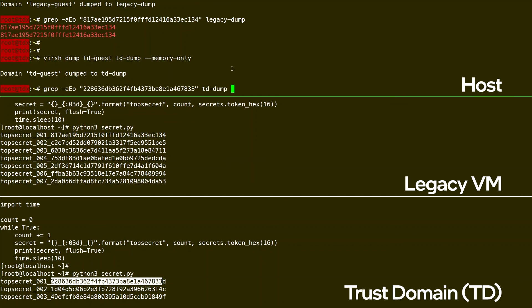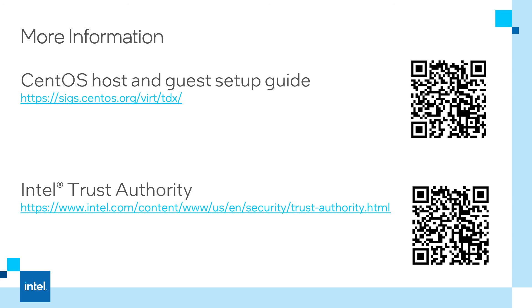I am not covering attestation in this demo, but there are tools to generate a quote with the test TDX attest sample application, copy the quote.dat out of the VM, and then verify the quote using the SGX Data Center Attestation Primitives. This was a simple demo to show how Intel TDX provides enhanced protection and secures workloads. The first link is to the CentOS host and guest setup guide. If you want to learn more about Intel Trust Authority, check out the second link. If you have a server that supports Intel TDX, give this a try.